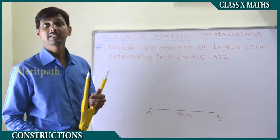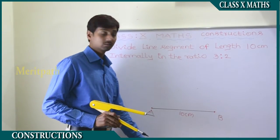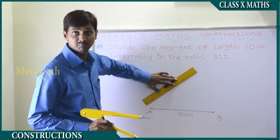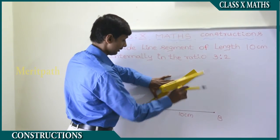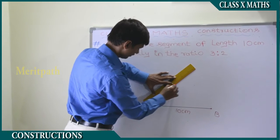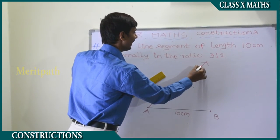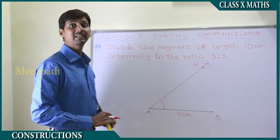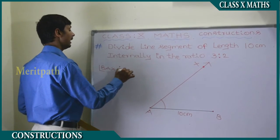Now let's draw an acute angle from one side of line segment AB, turning it upward. This acute angle is angle BAX — BAX is an acute angle.